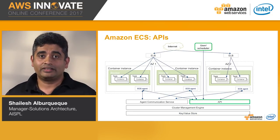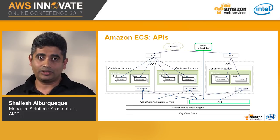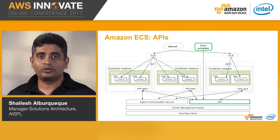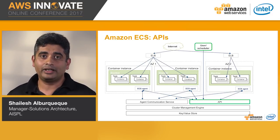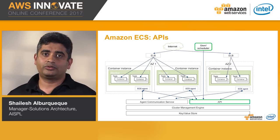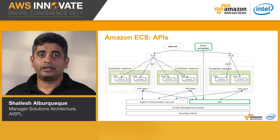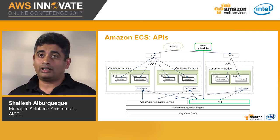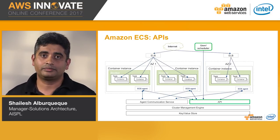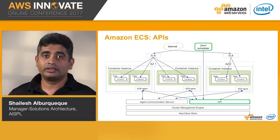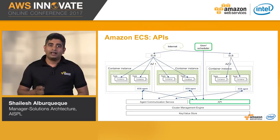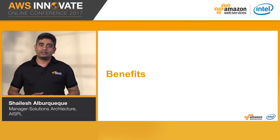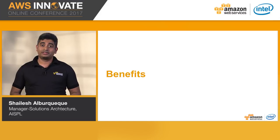Another unique aspect of ECS is the API layer. We have decoupled the container scheduling from the cluster management, and opened up the Amazon ECS cluster manager through a set of APIs that allows customers to access all the cluster state information stored in the key-value store. This API allows you to connect different varieties of schedulers to ECS, ensuring that you get the benefits of a robust cluster management engine and key-value store, while choosing our default schedulers or other schedulers. You can also connect ECS with your continuous integration and continuous delivery pipelines.